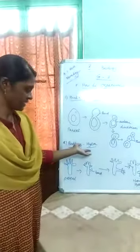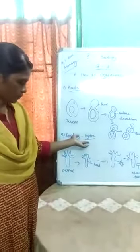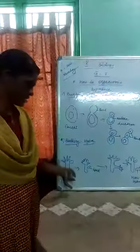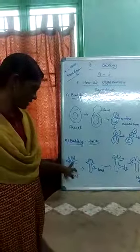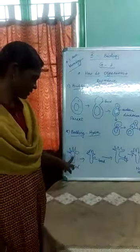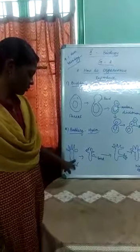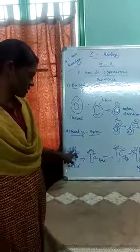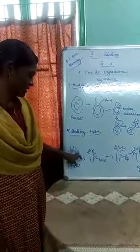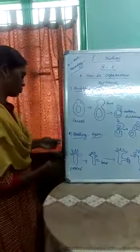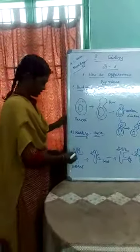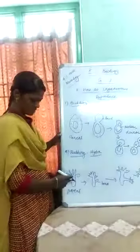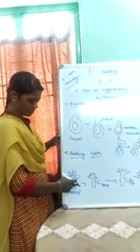Next, budding in hydra. Hydra belongs to the phylum Coelenterata. This is the diagram of hydra. From the body wall — this is the body wall — and these are the tentacles. In the center we see the mouth, surrounded by the tentacles. This is the body wall.